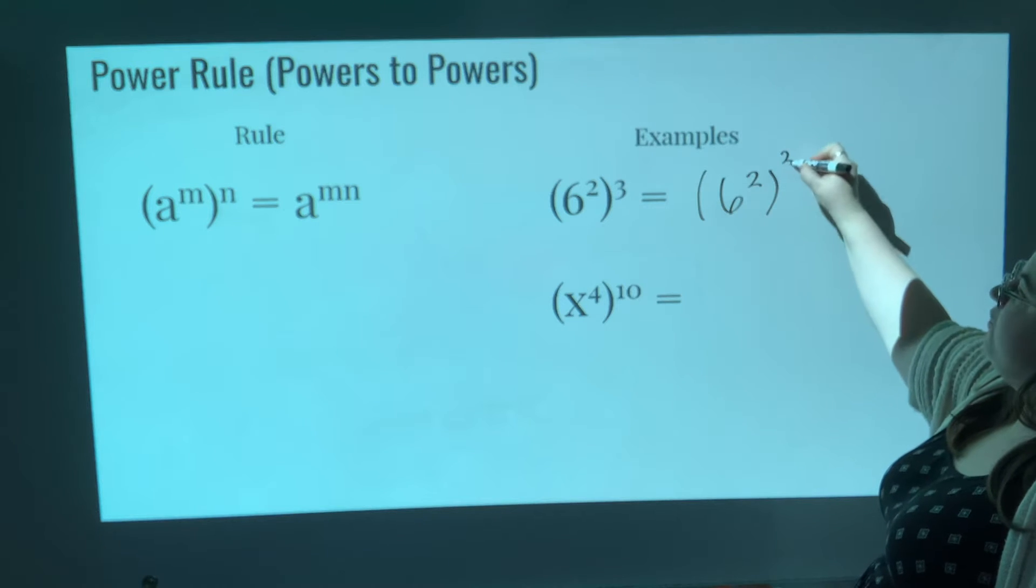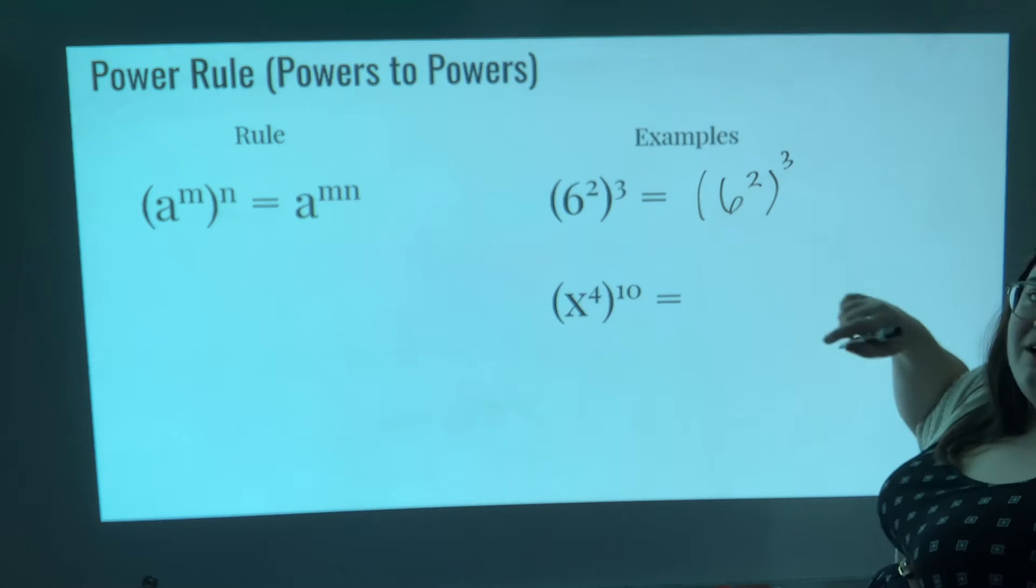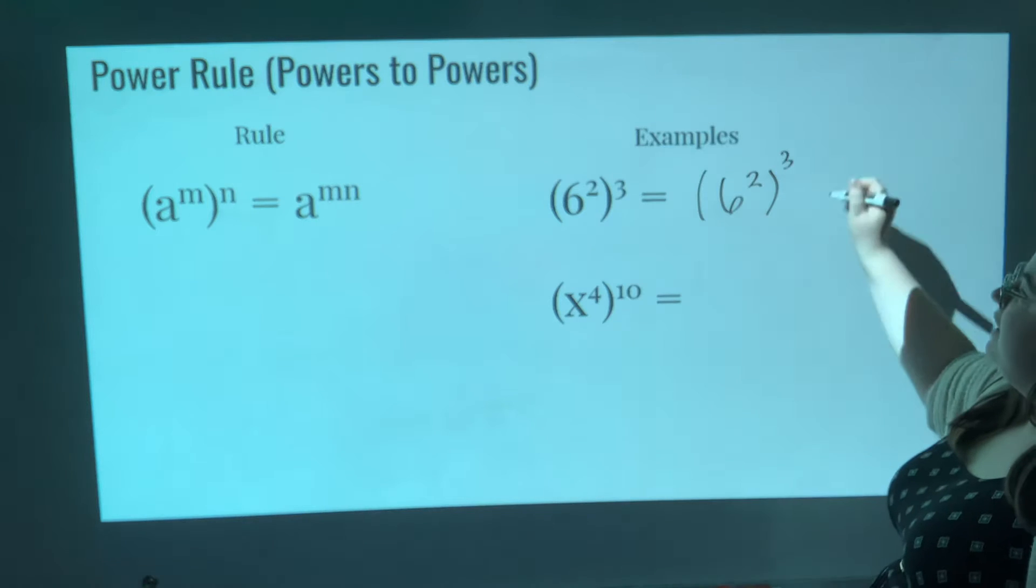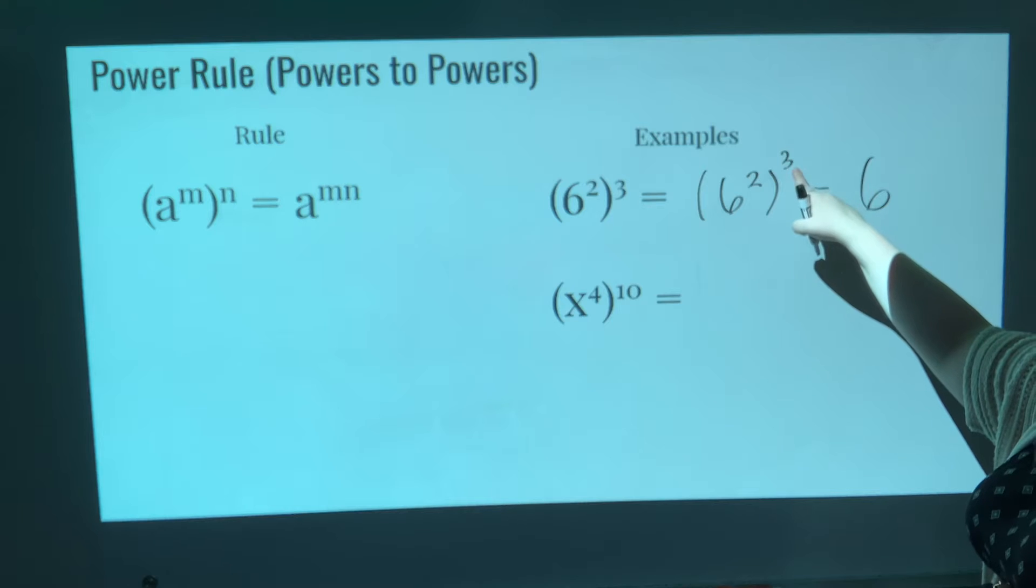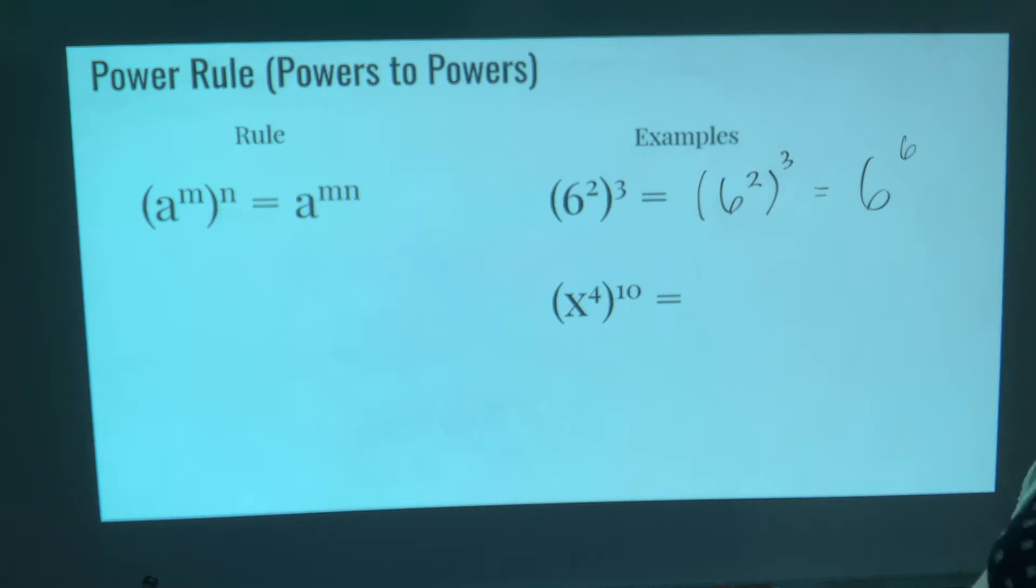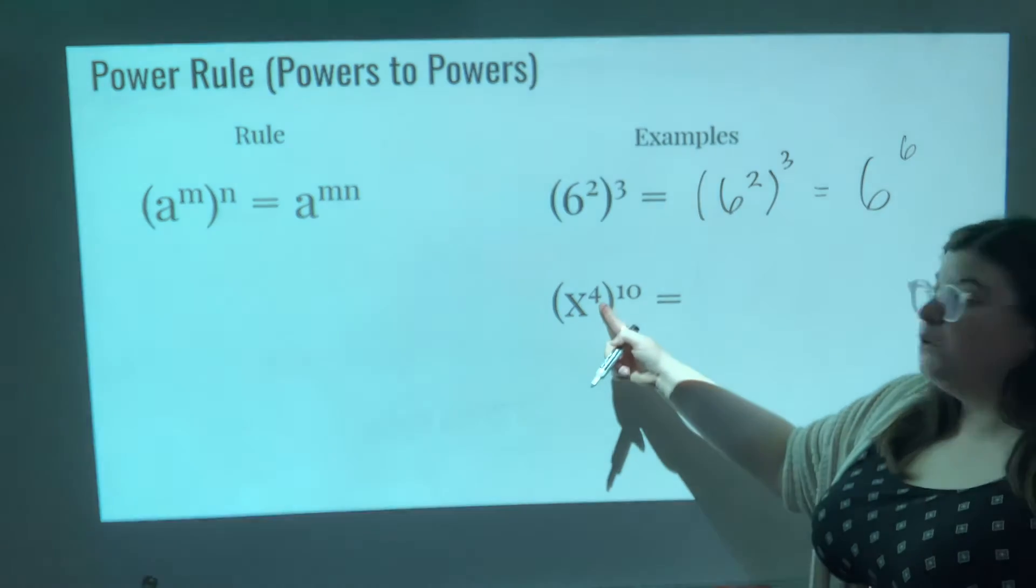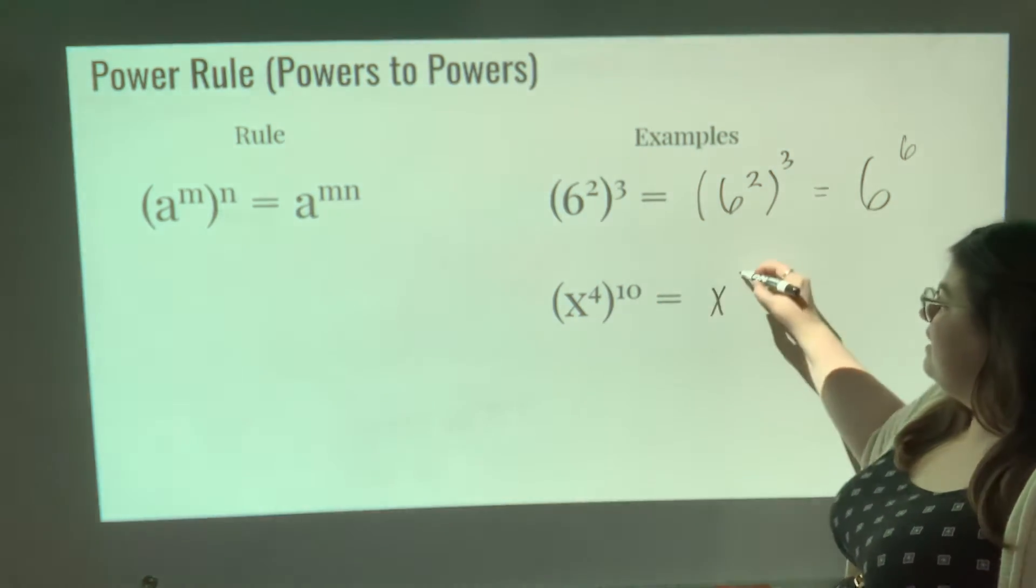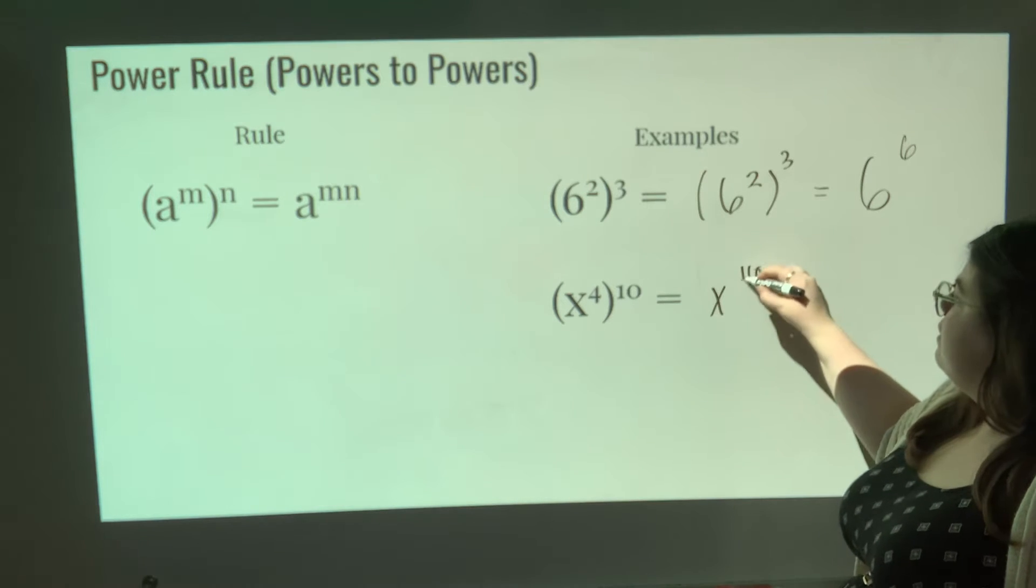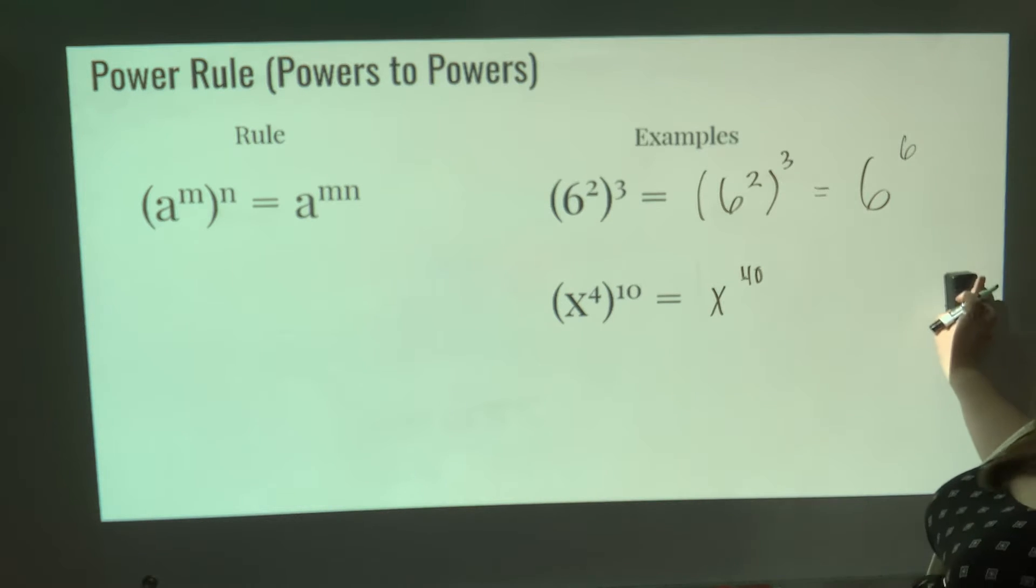Really, it's just 6 to the power of 2 times 3, multiplying the exponents. It's just the same thing as 6 to the power of 6. So x to the 4th power to the 10th power, right? That is the same thing as x to the 40th power. Pause if you need to.